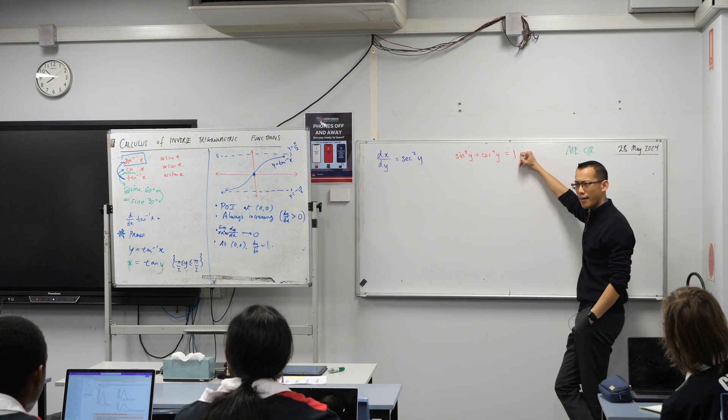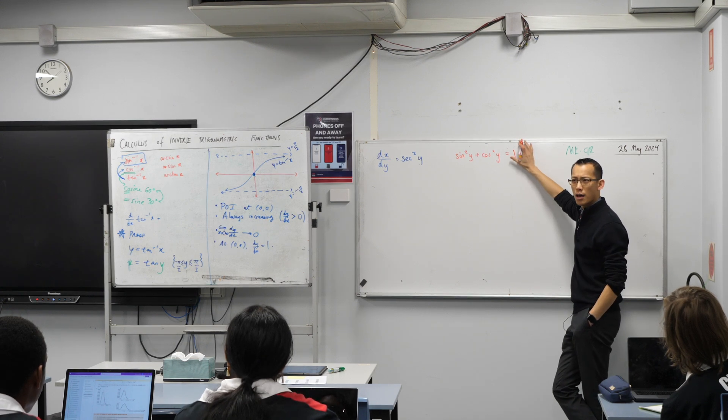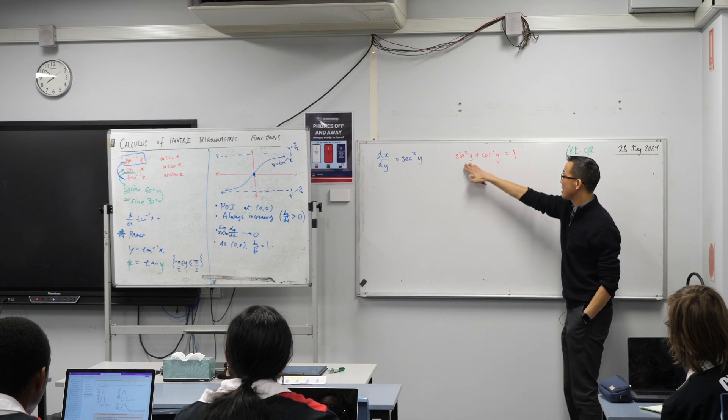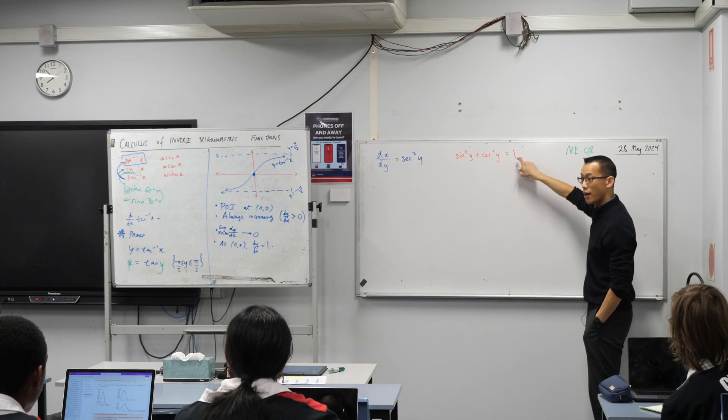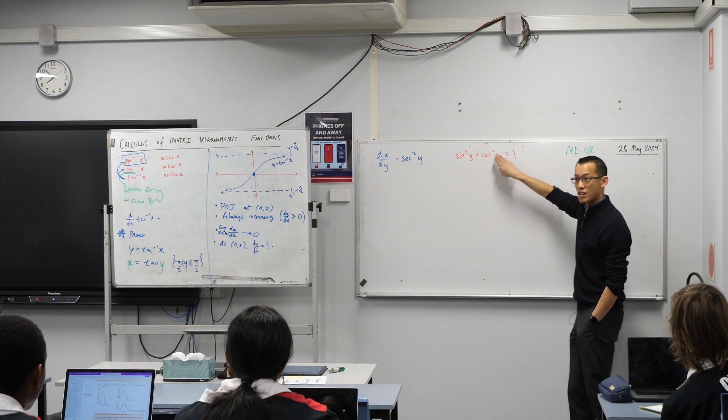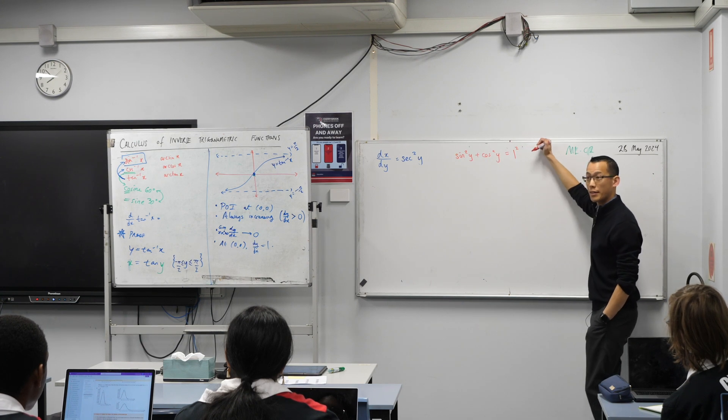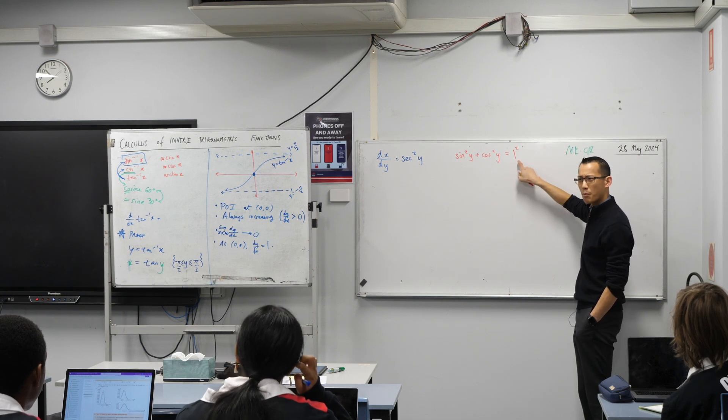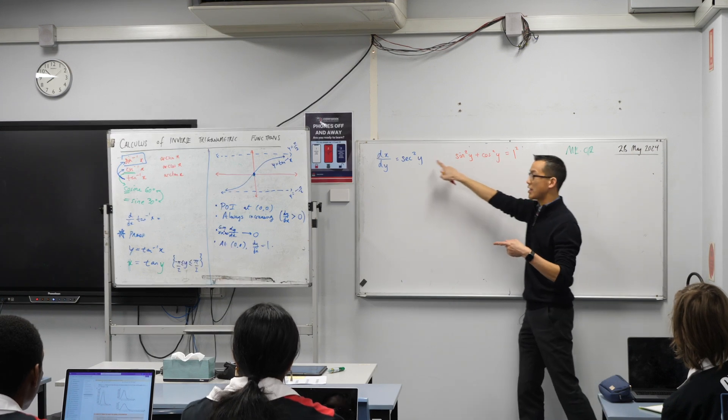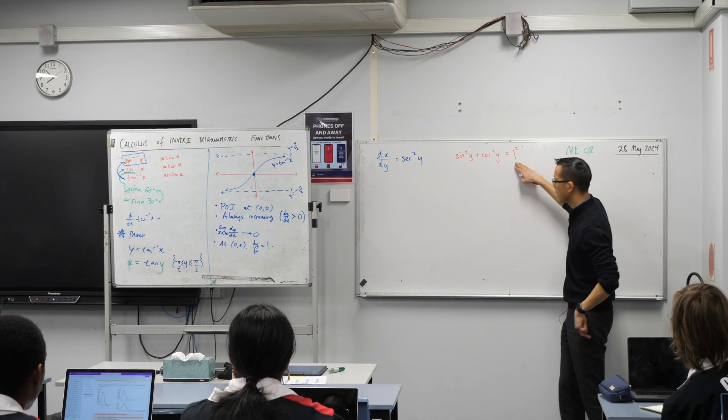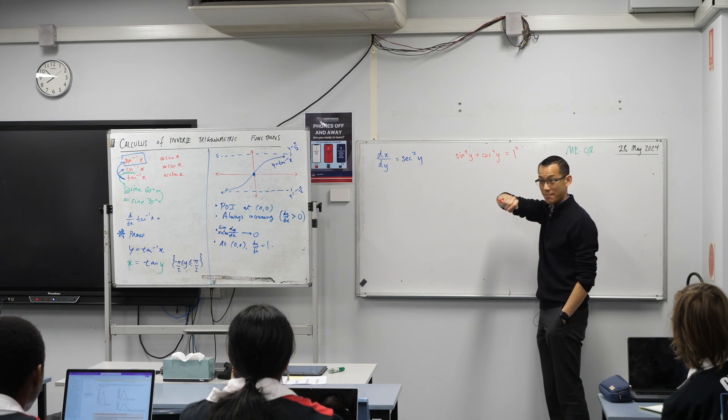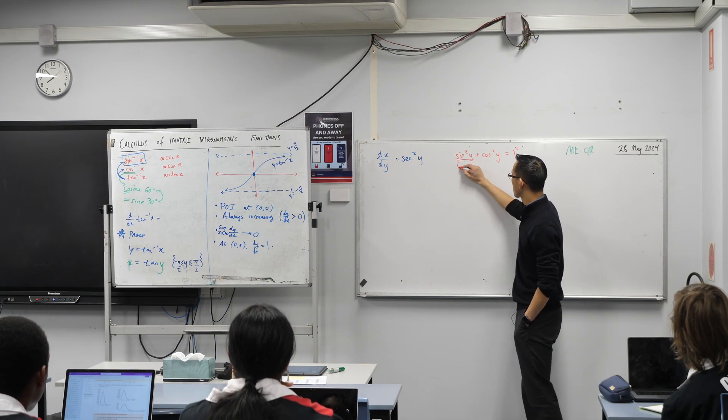It's the Pythagorean identity because in this particular triangle on the unit circle, this is a squared plus b squared equals c squared. There actually really should be a squared there, because this is the radius, this is the hypotenuse. We can get sec squared out of this by doing what to everything? Divide by cos squared, let's do it.